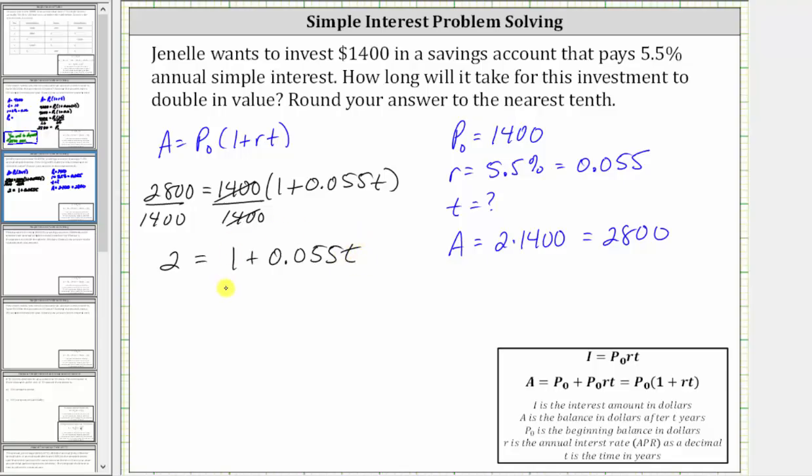And now we isolate the T term by subtracting one on both sides. Simplifying, two minus one is one. We have one equals 0.055 T.